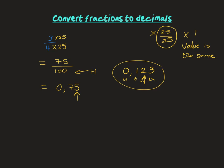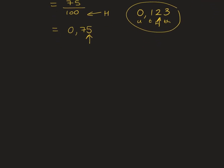So it's like undoing the previous work. In the previous section we went from the decimal, looked at the position, and got a fraction. Now we're going from the fraction to find the decimal position. Let's look at the examples from the worksheet. For number one, you've got to change 2 over 5.